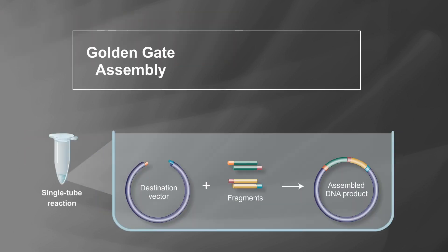Golden Gate assembly, MoClo, and other similar assembly methods are powerful and efficient tools and can be used successfully if the internal site domestication issue is appropriately addressed.